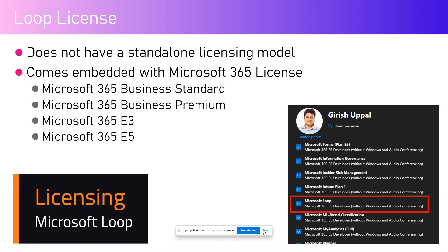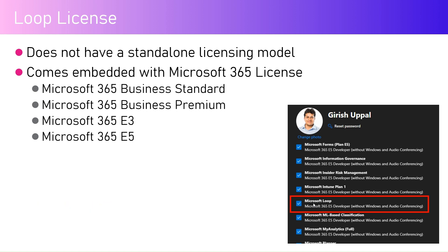In this video I'm going to talk about licensing within Microsoft Loop. Microsoft Loop does not have a standalone licensing model — it basically comes embedded with a Microsoft 365 license. So if you have Microsoft 365 Business Standard, Business Premium, E3, or E5 licensing, then you can use various functionality within Microsoft Loop.